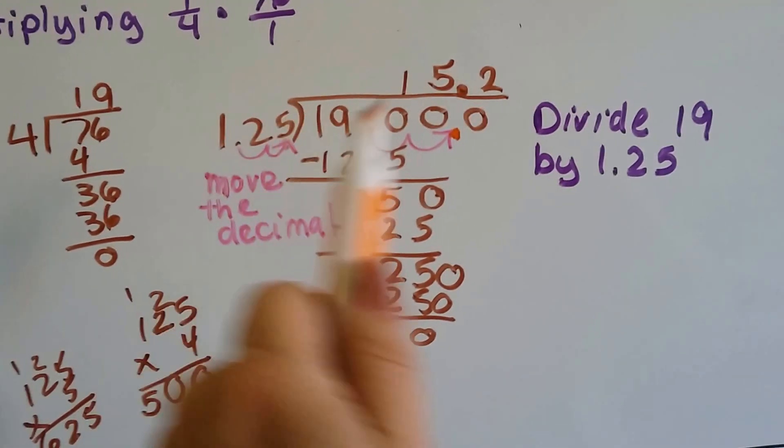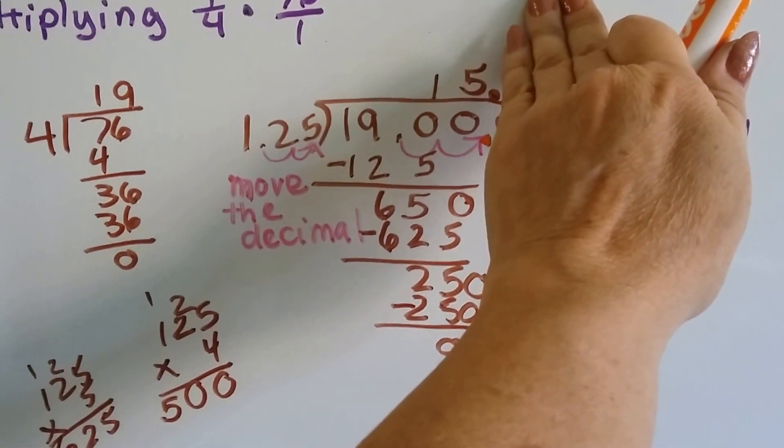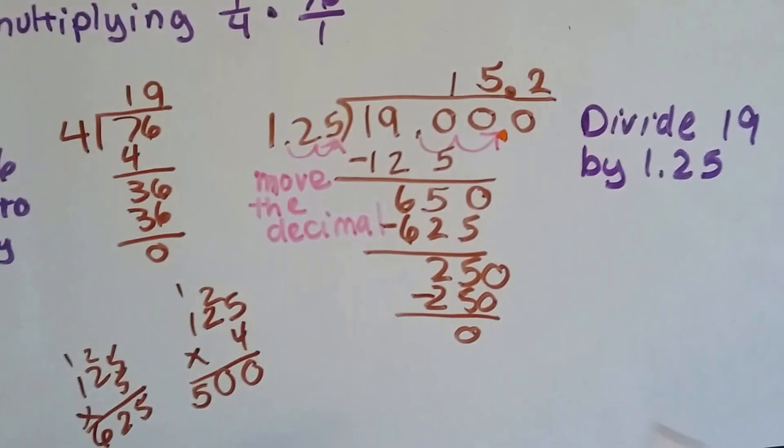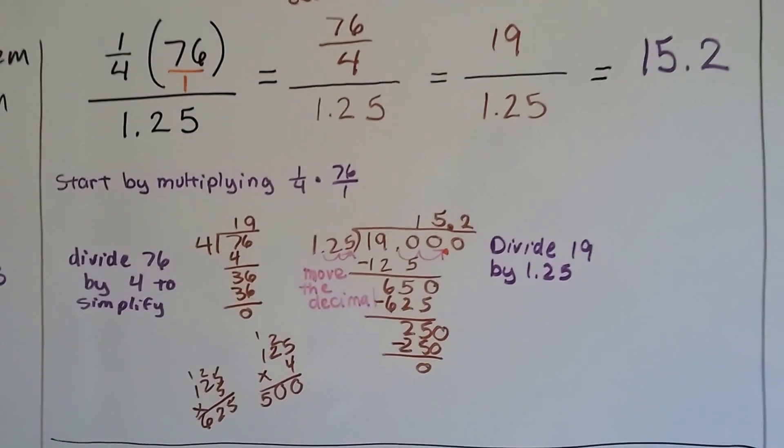So now, one hundred and twenty-five goes into nineteen hundred, which is now what it became instead of nineteen, because we moved the decimal. It's fifteen point two. So we know our answer is fifteen point two. Little step at a time.